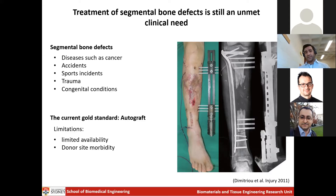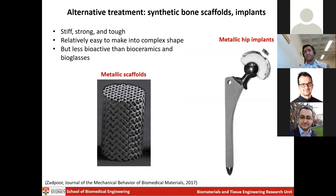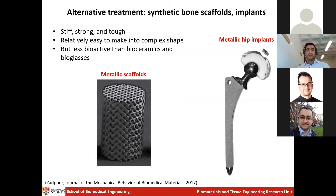The current gold standard to treat segmental bone defects is autografts — bone from one part of the body is harvested and implanted in the defect site. The problem is limited availability and donor site morbidity. Synthetic materials can also be used. Many are familiar with metallic implants and metallic scaffolds. Metals are strong, stiff, and tough, and relatively easy to form into complex shapes, but they are not as bioactive as bioceramics and bioglasses.